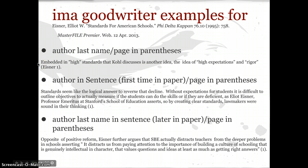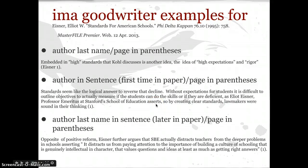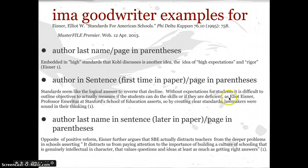In this sentence, embedded in high standards that Cole discusses is another idea — the idea of high expectations and rigor — and that is taken from the Eisner source. Here's another Eisner quote where the author appears in the sentence itself. She writes: 'Standards seem like a logical answer to reverse that decline. Without expectations for students, it is difficult to outline objectives to actually measure if students can do the skills or if they are deficient,' as Elliot Eisner, professor emeritus at Stanford's School of Education, asserts. She explains who Elliot Eisner is — taken right from her annotated bibliography — so she doesn't have to repeat his name. She can just put where she found it, which was page number one.